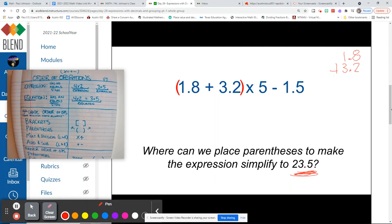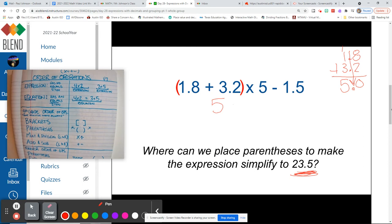So the first thing we want to do is add together 8 tenths and 2 tenths. 1 plus 3 is 5, and drop that decimal point like it's hot. Now we have the number 5 times 5 minus 1 and 5 tenths. Now, does this make more sense why our answer might be 23.5?